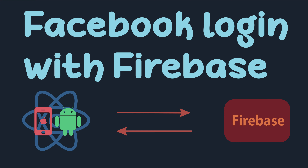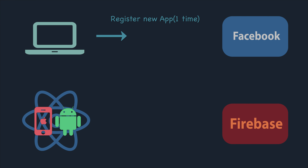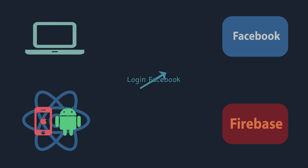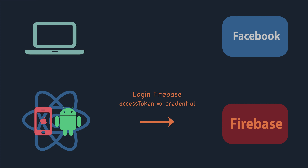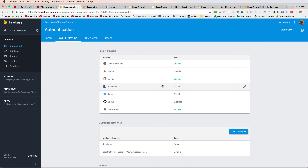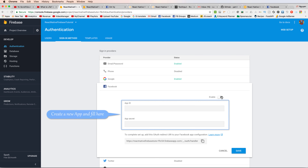In this video I will show you about Facebook login with Firebase. The process is: you register a new application in Facebook, Facebook gives you the app ID and app secret, you enable Facebook login in Firebase, and from your application you login with Facebook. Facebook gives the application an access token, you convert it to a credential, log into Firebase, and Firebase returns the user object to the application.